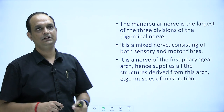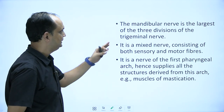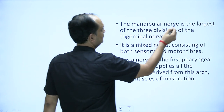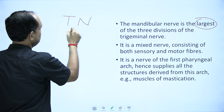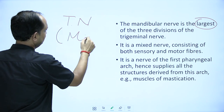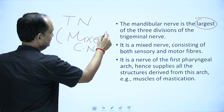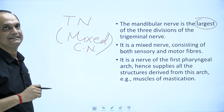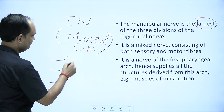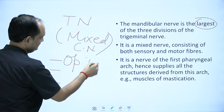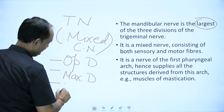What is the mandibular nerve? It is the largest of all three divisions of the trigeminal nerve. The trigeminal nerve is a mixed cranial nerve, and it has three branches: the ophthalmic division, the maxillary division, and the mandibular division.